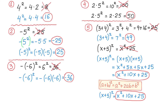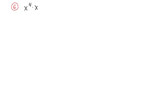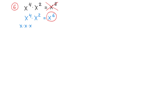In the next common mistake, we multiply x to the fourth power by x to the second power. Multiplying the exponents 4 and 2 to get x to the power of 8 would be incorrect. Instead, when multiplying two expressions with the same base, we add the exponents, giving x to the power of 6. This is because x to the fourth represents a product of four x's, x squared represents two x's, and together that is a product of six x's, written as x to the sixth.